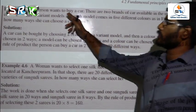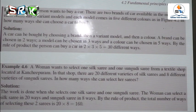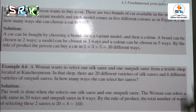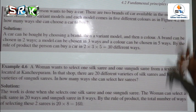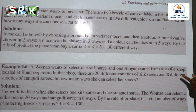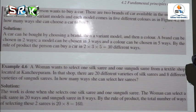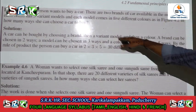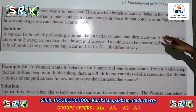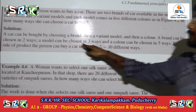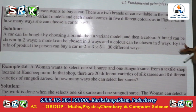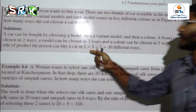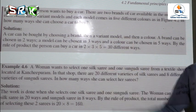Example 4.5: A person wants to buy a car. There are two brands, each with three variant models, and each model comes in five different colors. By the product rule: 2 × 3 × 5 = 30 different ways a car can be chosen.